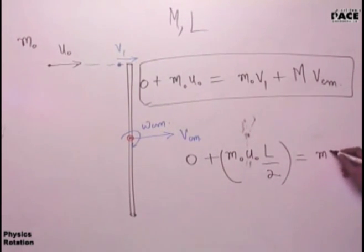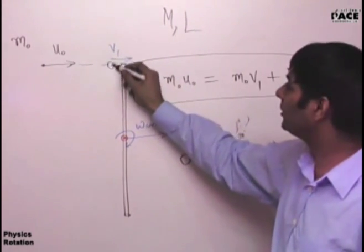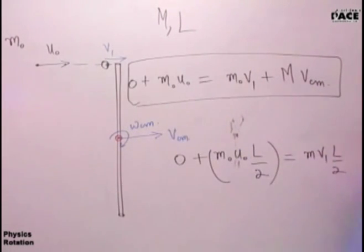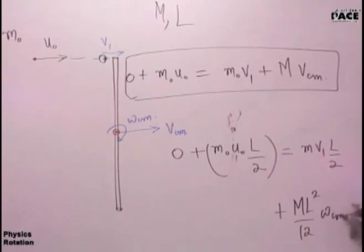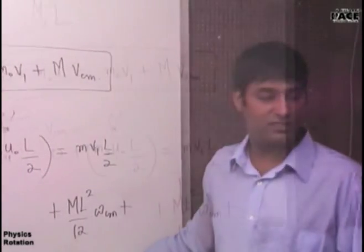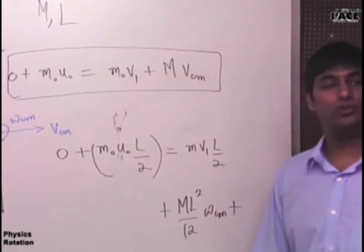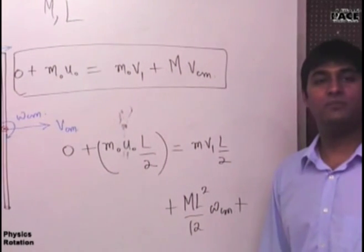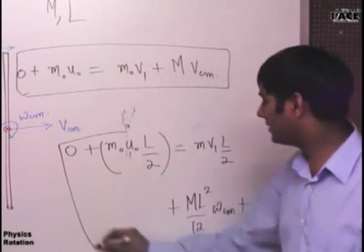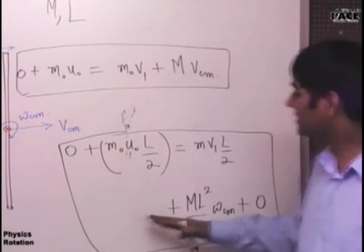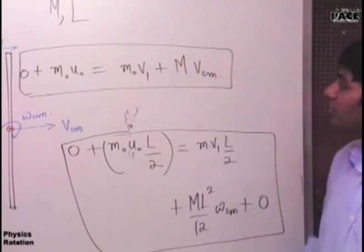After collision it will be M not into V1 into L by 2. This is the angular momentum of the point mass. I have assumed V1 is the velocity of the point mass after collision. Plus for the rod, it will be Icm omega cm, which is ml squared by 12 into omega cm. This is linear momentum, this is angular momentum.